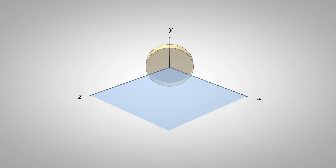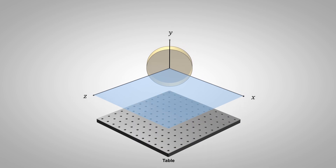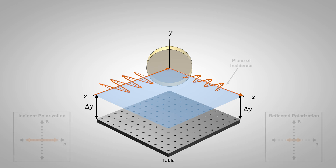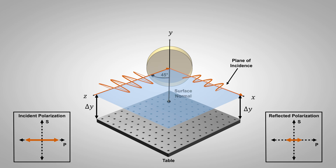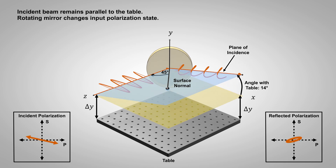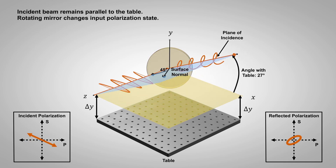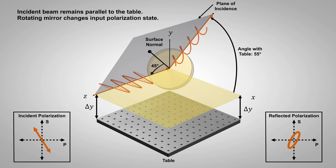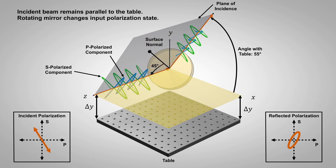Note that just changing the mirror's orientation can affect the incident light's polarization state. For example, consider incident light polarized parallel to the table. If the incident light and reflected beam heights are the same, the plane of incidence is parallel to the table and the incident beam is p-polarized. If the mirror's orientation is adjusted so the reflected beam height changes, then the plane of incidence also changes, and the incident polarization state is now a combination of s- and p-polarization.